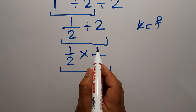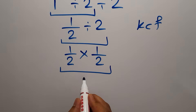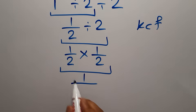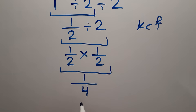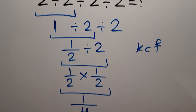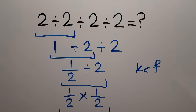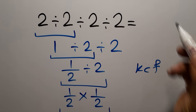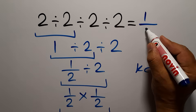1 times 1 gives us 1, over 2 times 2 which equals 4. So our final answer to this problem is 1 over 4.